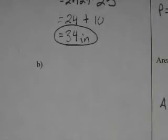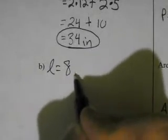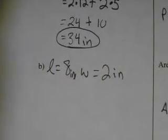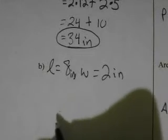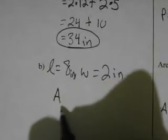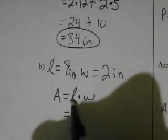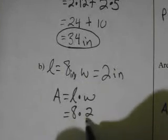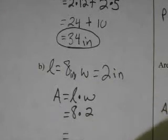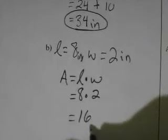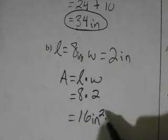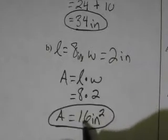I'd like you to try one. In example B, the length will be 8 and the width will be 2 — we'll call these inches. Hit pause and try this problem, see if you can find the area. When you're ready to continue, hit play. Okay, hopefully you had time to try the problem. Area is the length times the width. The length is 8 and the width is 2 — substituting in, 8 times 2 is 16. It's inches squared because we're taking inches times inches. Our area is 16 inches squared.